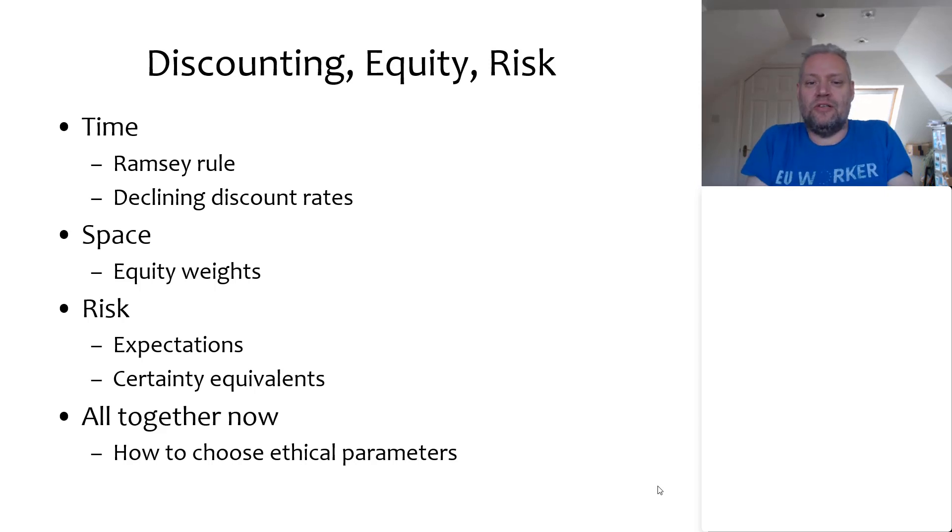Today I'm going to talk about three aspects of aggregation. We're going to aggregate the impacts of climate change over time, and that's under the heading of discounting. We're going to aggregate the impacts of climate change over different people, and that's the aspect of equity. And we're going to aggregate the impacts of climate change over alternative futures, possible futures, and that's under the heading of risk.